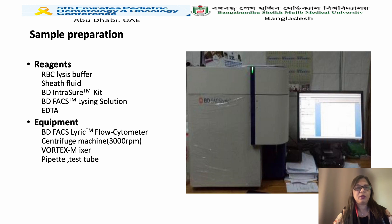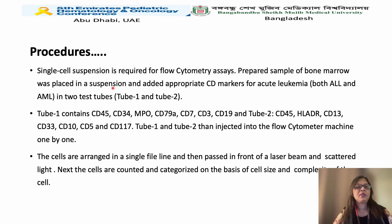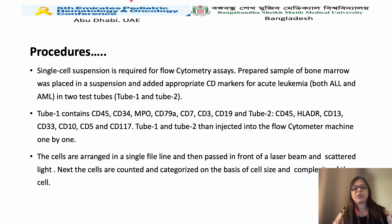Single cell suspension is required for flow cytometry analysis. The prepared bone marrow sample was placed in suspension and appropriate CD markers for acute leukemia — for both ALL and AML — were placed into test tubes, which were then injected into the flow cytometer machine one by one. The cells are arranged in a single cell line and passed in front of a laser beam.